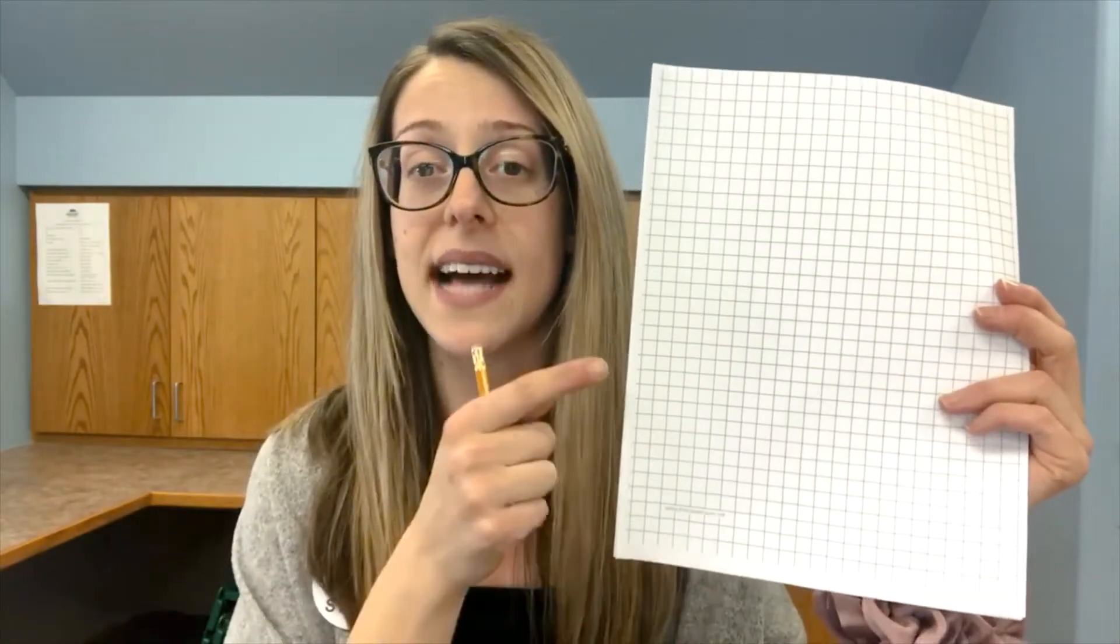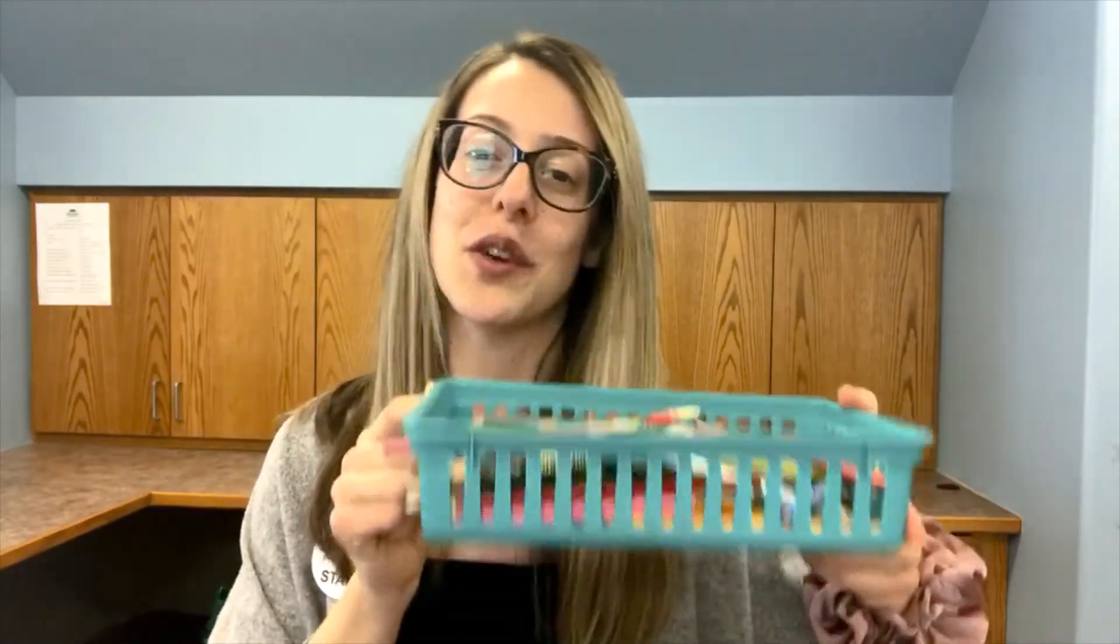And all you need for today's spiral lateral activity is things that you have in your home, like a pencil or a marker, something to draw your spiral lateral with, some grid paper. Grid paper that has tiny squares is better as opposed to larger squares. So the smaller the squares, the better for this activity. And of course, some pencil crayons to color in your final product. So if you're ready, let's get to spiral laddering.